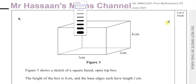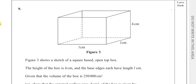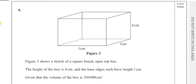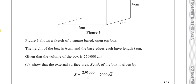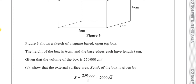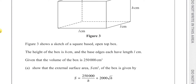Here we have a square-based open-top box. The height of the box is H centimeters and the base edges each have lengths L centimeters. Given that the volume of the box is 250,000 cubic centimeters, we have to show that the external surface area S of the box is given by this expression.